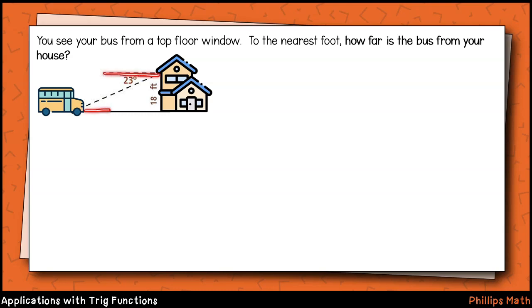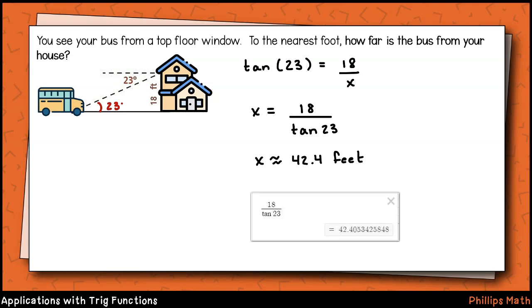Again, our eyeline makes a parallel line with the ground. Our old angle pair relationships come in handy here. The angle of depression is congruent to this ground angle by alternate interior angles. So we've got the side opposite that angle, and we're interested in the distance from the bus to the house. So that's the side adjacent to our known angle. We should use the tangent function here. We'll set this up as tangent of 23 degrees equals 18 over x, which is our missing side. Next, we'll multiply both sides of the equation by x and divide both sides of the equation by tangent of 23 degrees. We have x equals 18 over tangent of 23 degrees. We have x equals about 42.4 feet.